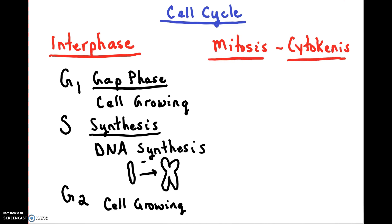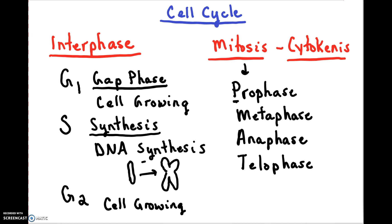In mitosis, we have the following phases: prophase, metaphase, anaphase, and telophase. So PMAT - you can think P for prophase, M for metaphase, A for anaphase, T for telophase.